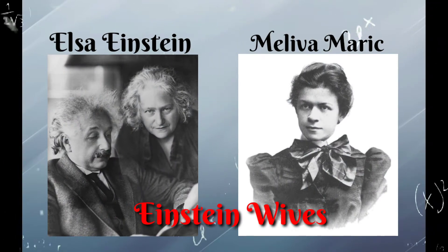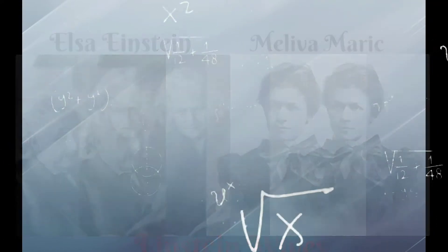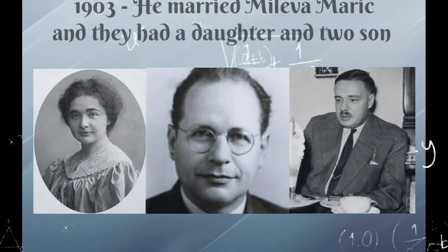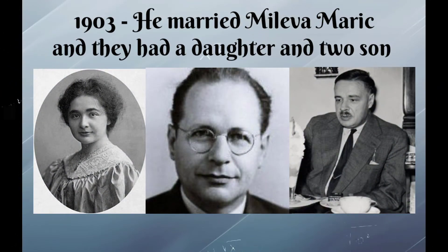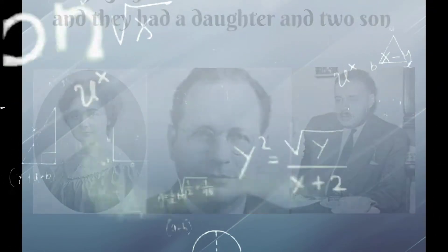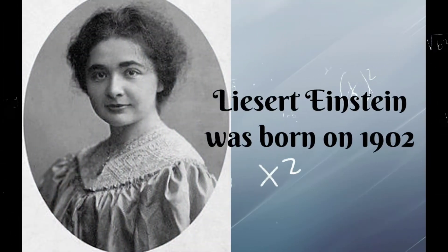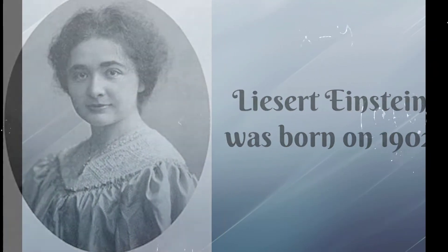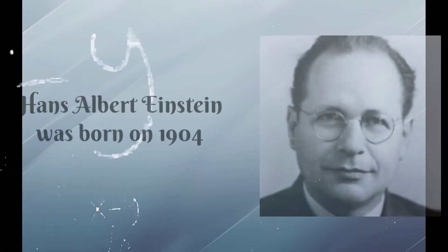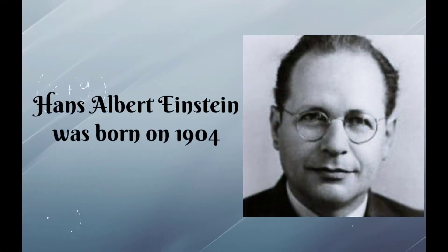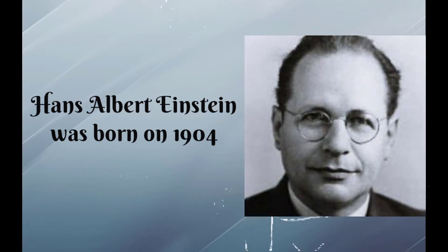Albert Einstein has two wives, named Elsa Einstein and Mileva Maric. In 1903, he married Mileva Maric and they had a daughter and two sons. The daughter of Albert Einstein is Lieserl Einstein. She was born in 1902. After two years, Mileva Maric gave birth to their second child, Hans Albert Einstein, born in 1904.